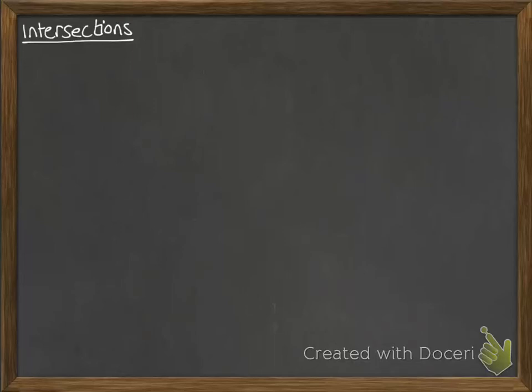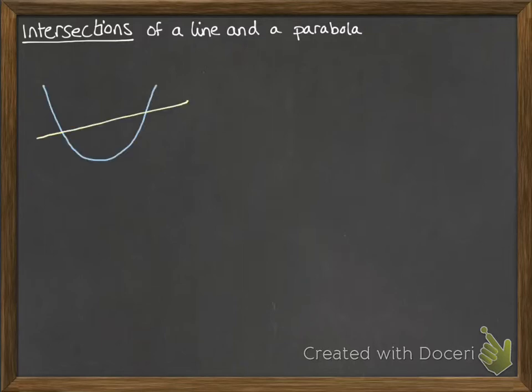Now we're going to build a little bit on what you already know about intersections. This time we are going to look at the intersection of a line and a parabola. So we have a parabola like this. We could have a line that intersects it twice, so there's two points of intersection.